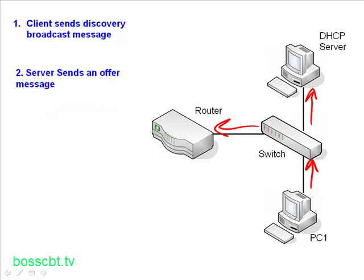Step two involves the server responding to this broadcast. The server sends an offer message, and this offer message will actually contain an IP address — essentially saying, "Here's an IP you can use." If there were multiple DHCP servers, the PC would receive multiple offer messages in response.